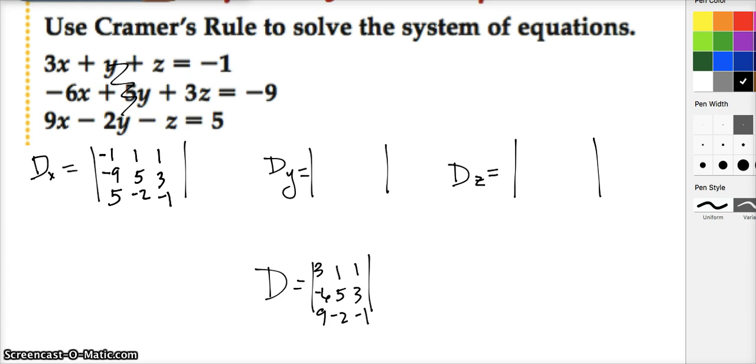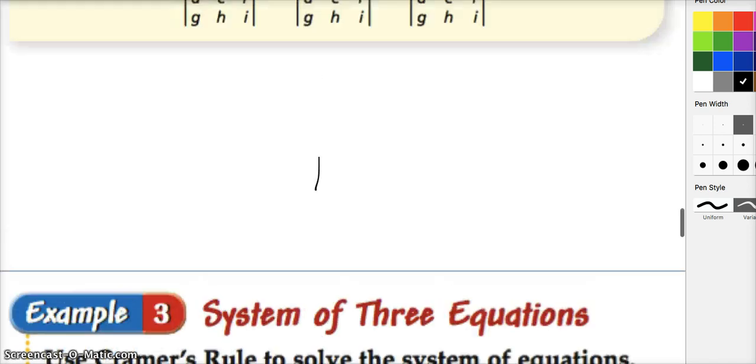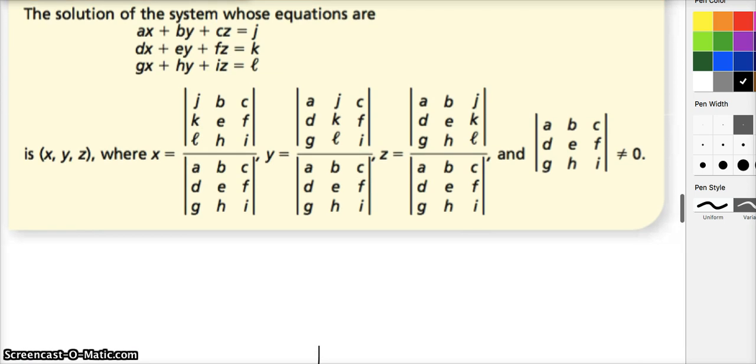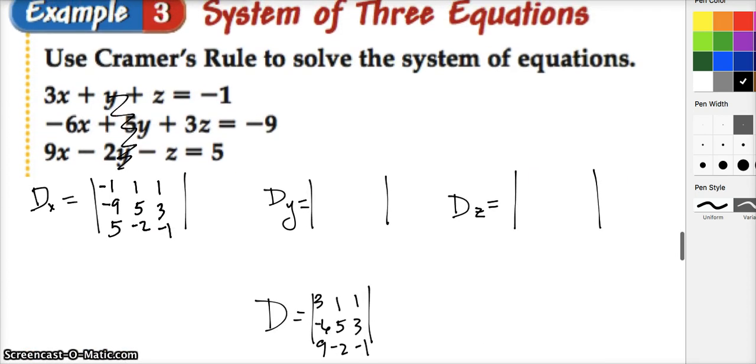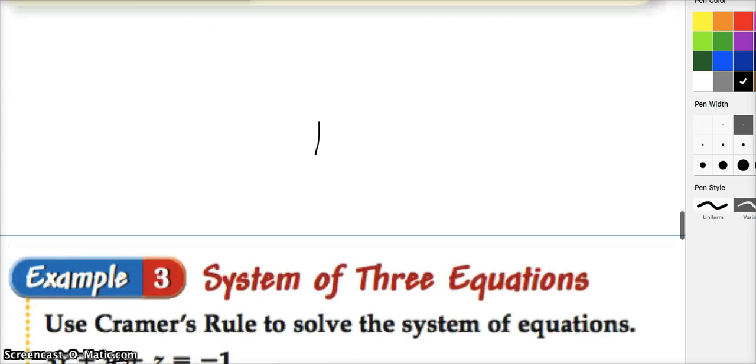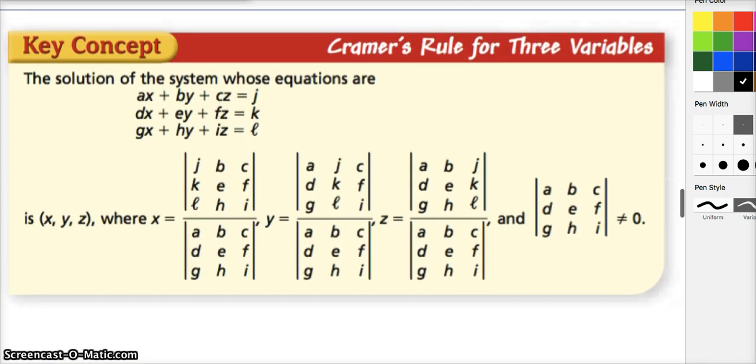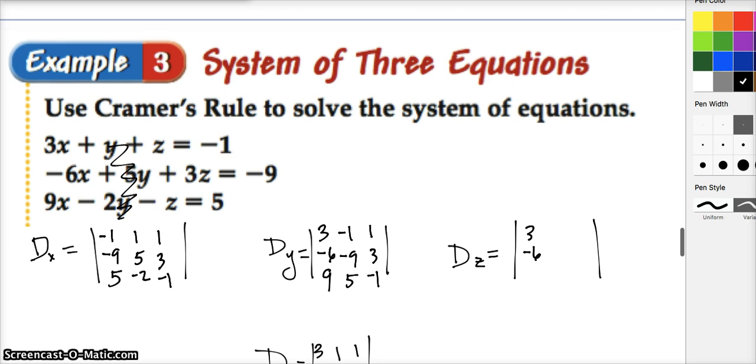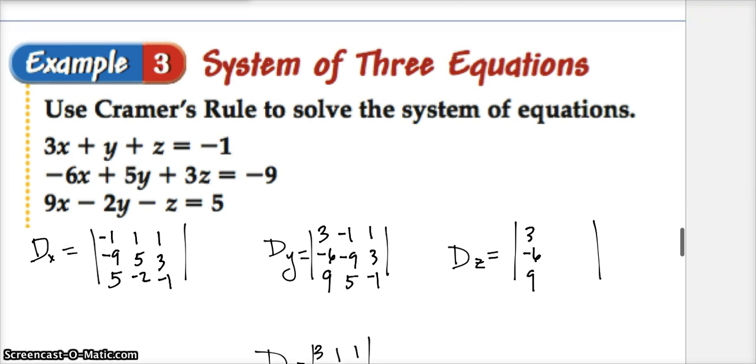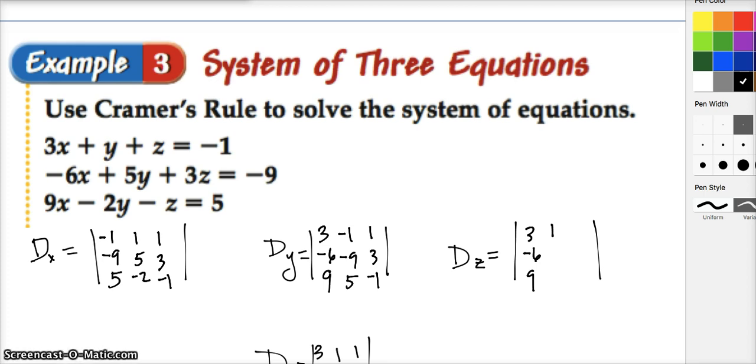Write down the coefficients of Z: 1, 3, and negative 1. I'm going to continue the same way. To get the Y determinant, we cross out the Y, and we write down the X coefficients, then the answers, then the Z coefficients. X coefficients will come first: 3, negative 6, and then 9. Then the answers: negative 1, negative 9, and 5. Then the Z coefficients: 1, 3, and negative 1. Finally, for Z, we're going to do the X coefficients, the Y coefficients, and then the answers.